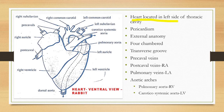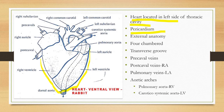The heart is located on the left side of the thoracic cavity. It is covered by a double-layered membrane called the pericardium. There is a space between the pericardium and the heart called the pericardial space, which is filled with pericardial fluid.